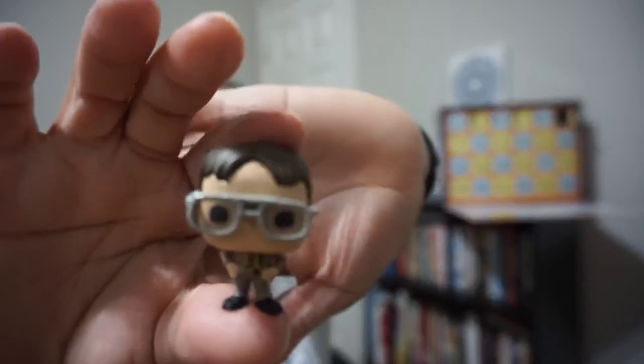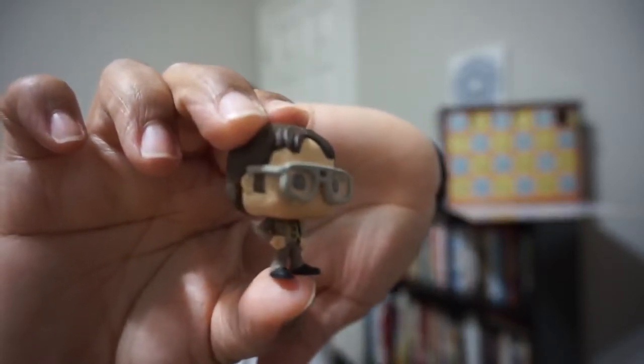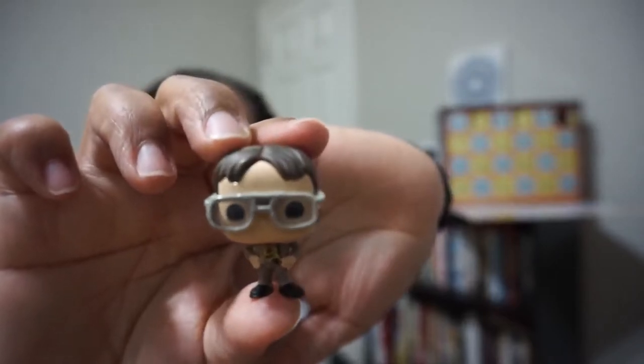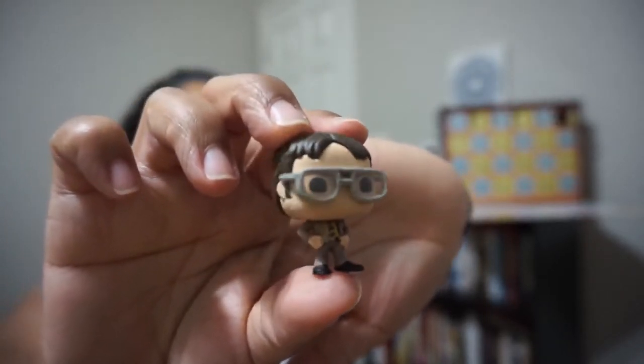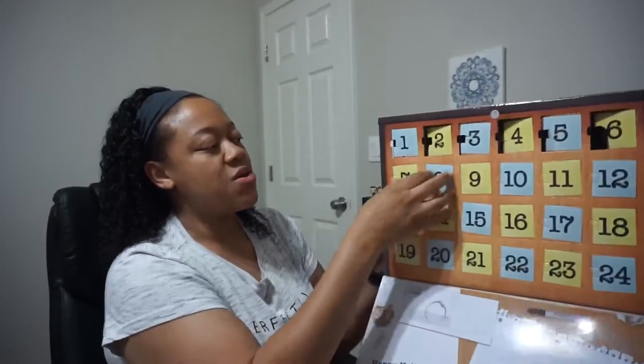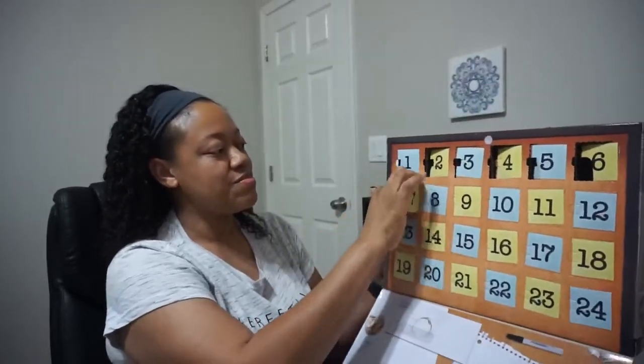So you guys, we're working our way through. We are going to door number six. Let's see who's inside. Am I going to remember? It's Dwight. Look at him. Look at those glasses. Look at that detail. Yeah. That's one of the favorite, my favorite things so far about these figures is the detail on each one. They got these spot on spot on so far guys.